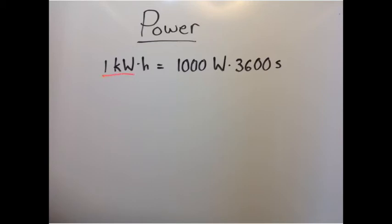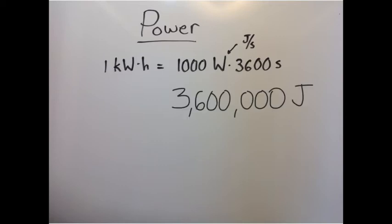Well, a kilowatt is 1,000 watts. An hour is 3,600 seconds, 60 seconds per minute, 60 minutes per hour. And since a watt is a joule per second, those seconds units are going to cancel, giving us 3,600,000 joules. That's one kilowatt hour.